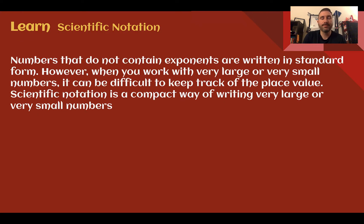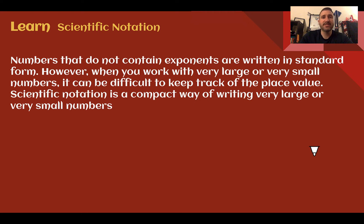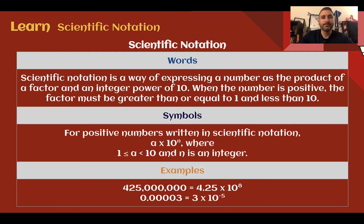Scientific notation. Numbers that do not contain exponents are written in standard form. However, when you work with very large or very small numbers, it can be difficult to keep track of the place value. Scientific notation is a compact way of writing very large or very small numbers.